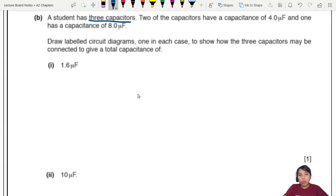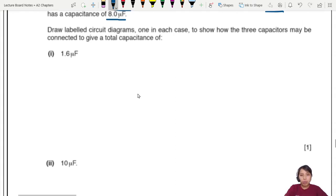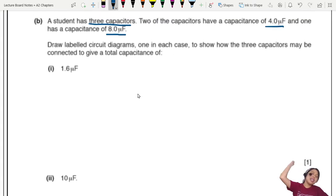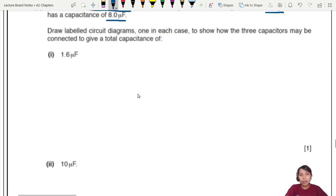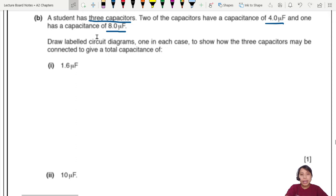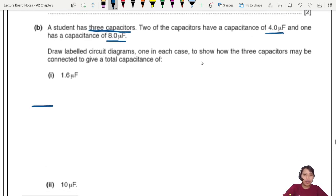A student has three capacitors. Two have 4 microfarad, one has 8 microfarad. Draw labeled circuit diagrams to show how this may be connected to give a total capacitance of 1.6. So it's kind of a try and error. These ones are 1.6, that's way smaller than any of these. So I suspect you have to connect everything in series. When you connect in series, the total capacitance decreases.